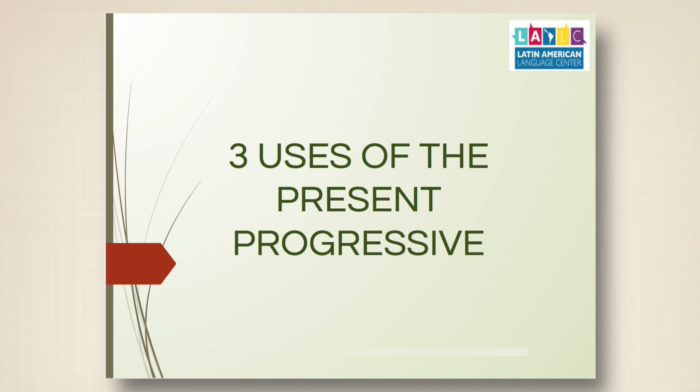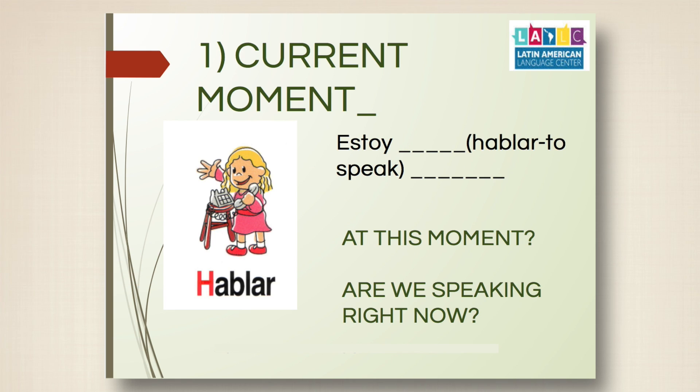Now let's look at the three uses of the present progressive. Even though in English we use 'I am running' or 'you are running,' in Spanish there are actually three different uses for the same grammar structure. Let's look at some activities together and try to figure out the rules.